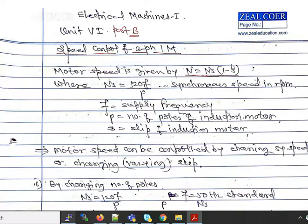When the slip is very small at light load, the speed is high. If the slip increases, speed decreases. That means motor speed can be controlled by changing the synchronous speed or by varying the slip.